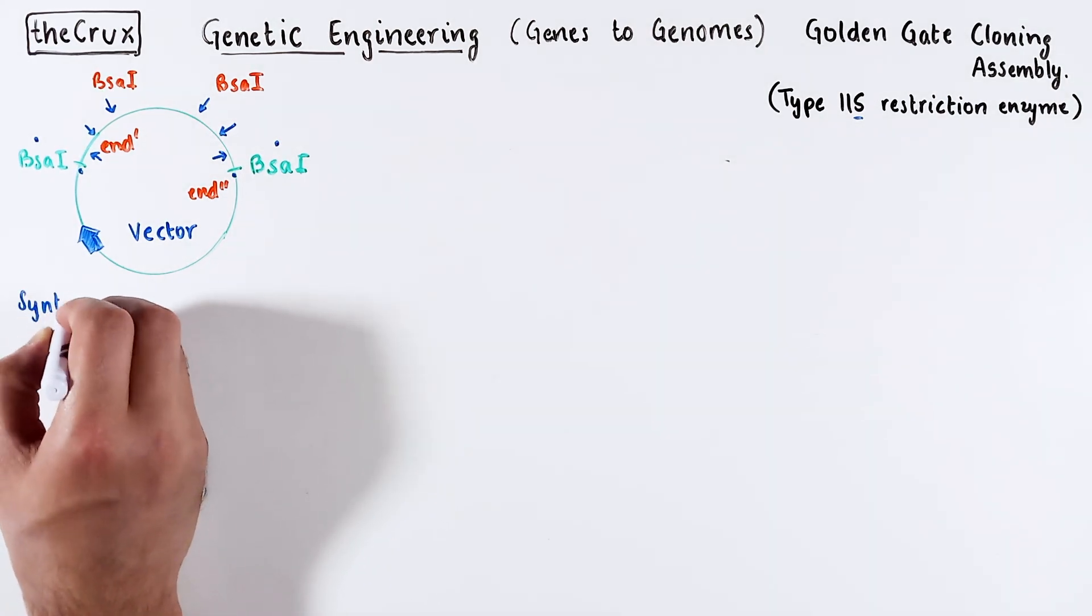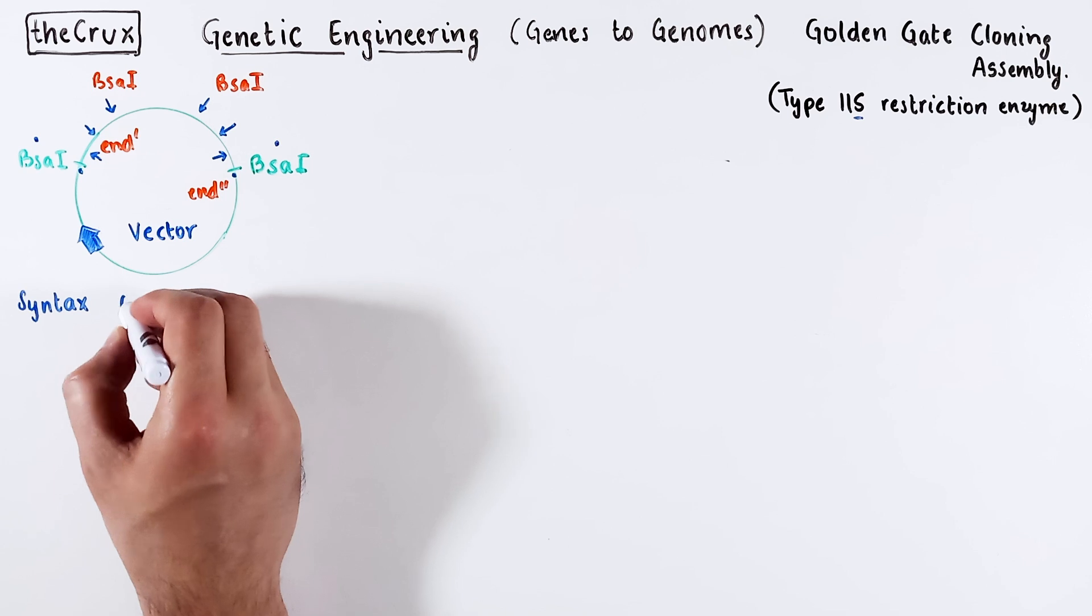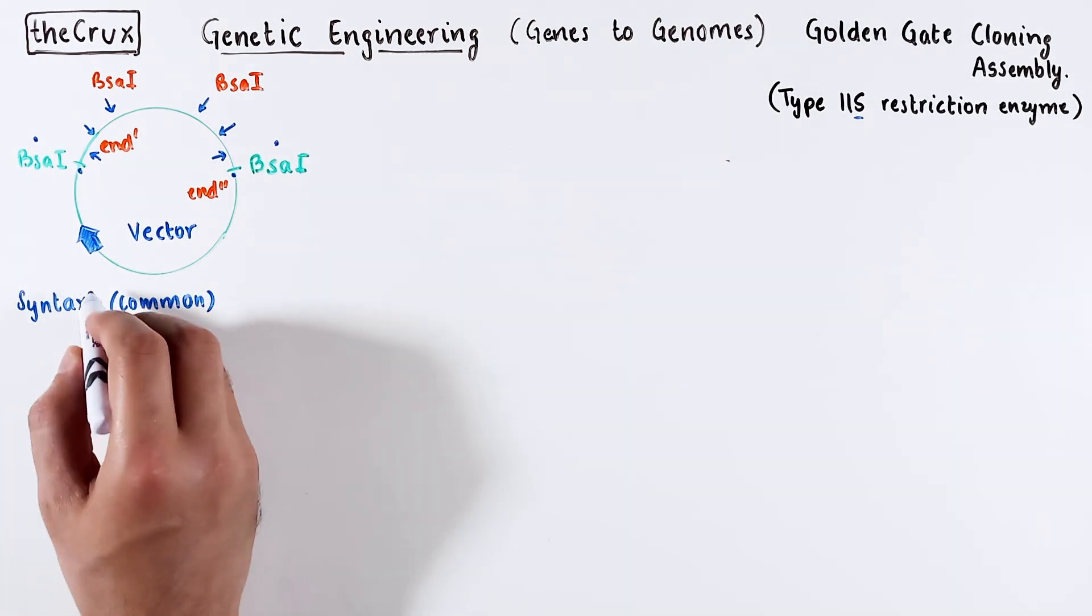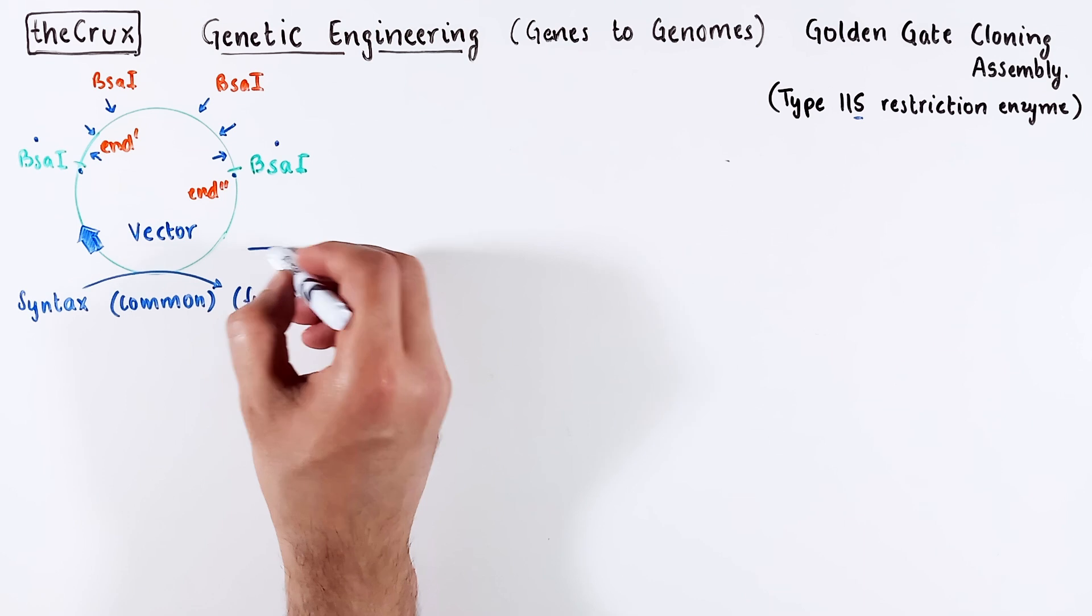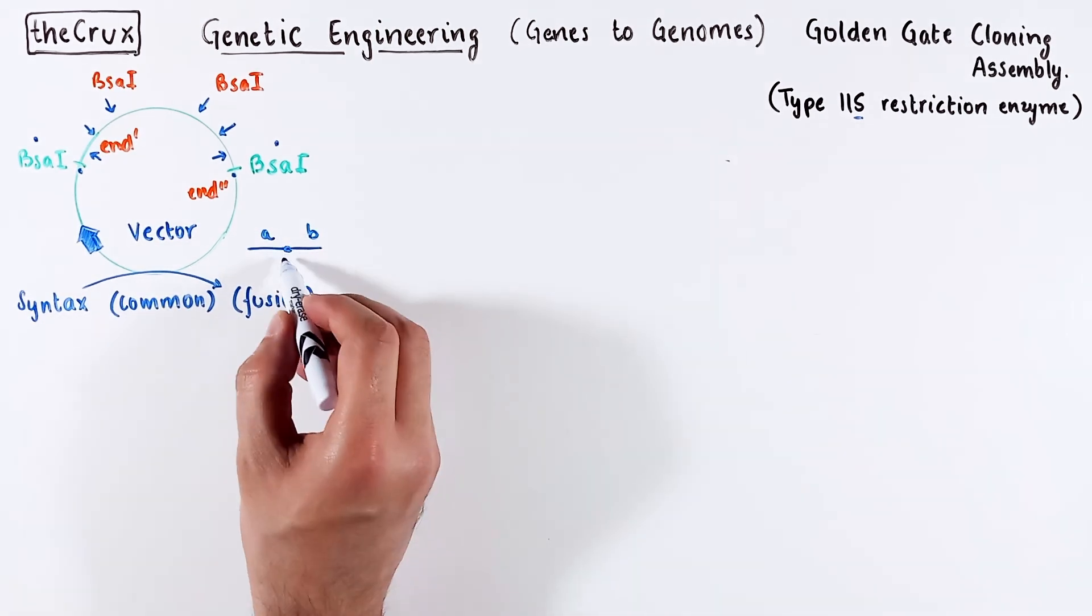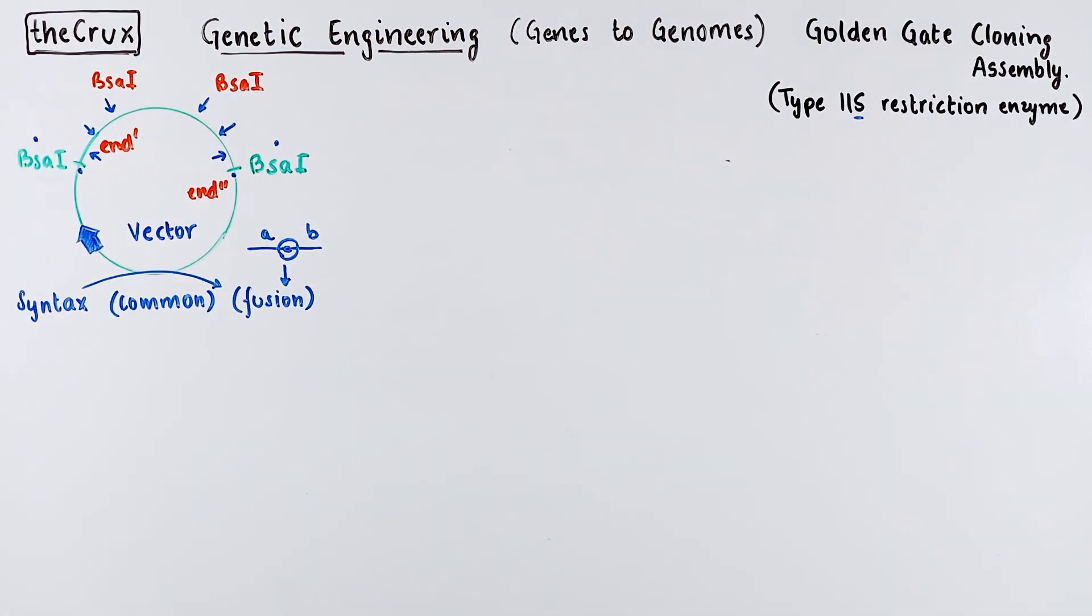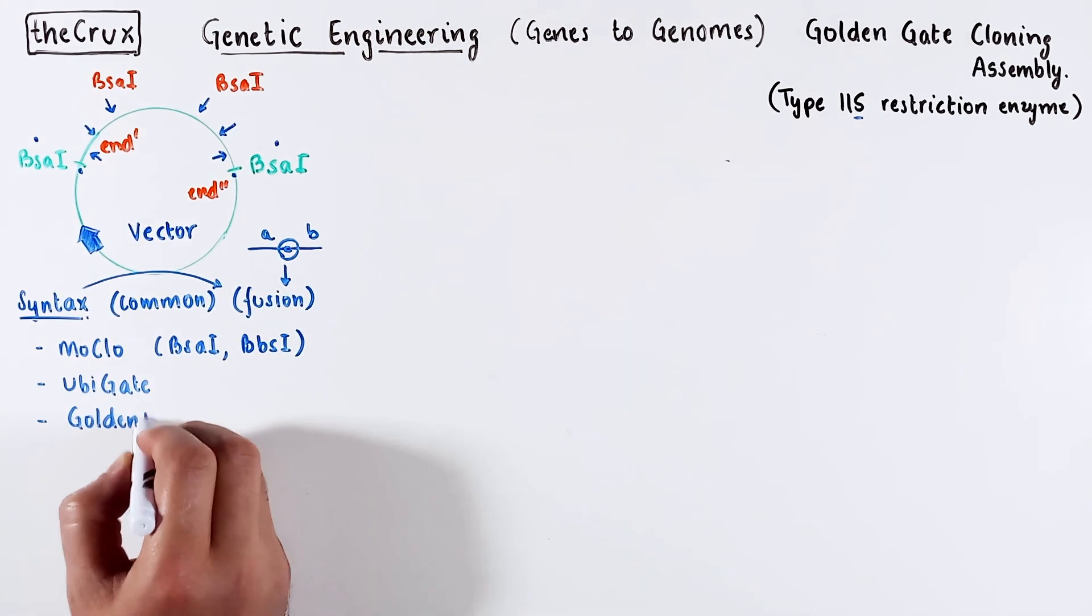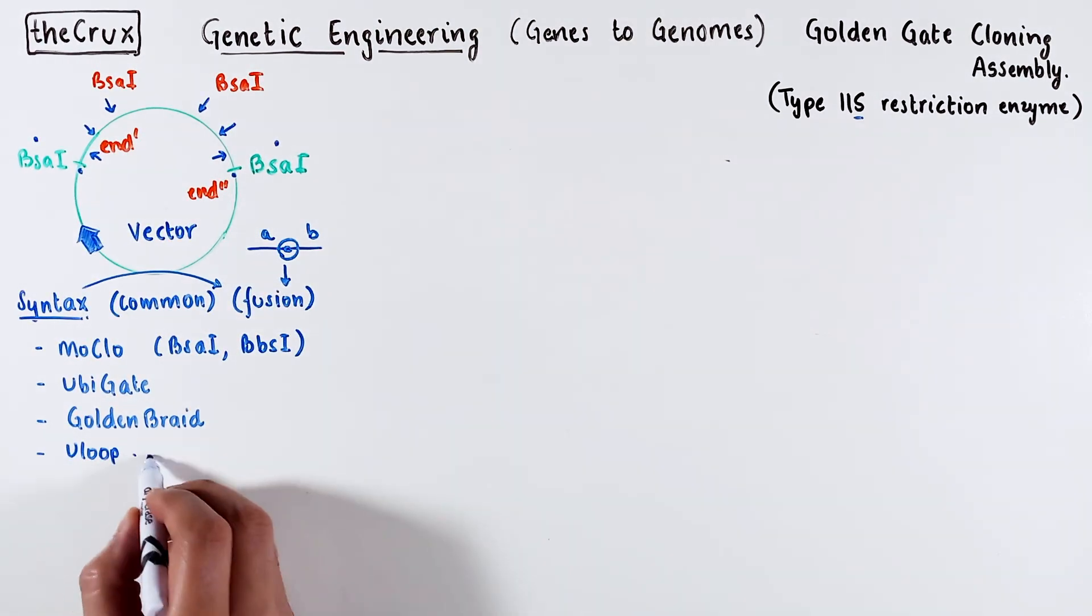If you truly dig into Golden Gate, you will find that scientists across the world have developed a common language, a syntax for Golden Gate cloning. The syntax refers to the fusion points between any two inserts, which means it is a sequence of overlapping nucleotides between any two fragments. These languages depend on the style of Golden Gate assembly and the enzymes used and their purpose. And there are names of each of these syntax.